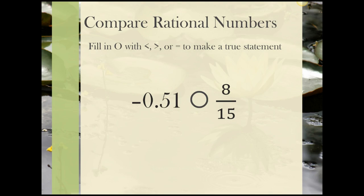Let's compare -0.05 with 8/15. Make sure you always look at those signs first because in this case, we have a negative decimal and a positive fraction. A positive value is always greater than a negative value. No need to do any conversion to solve this one. We know automatically that -0.05 is less than positive 8/15.